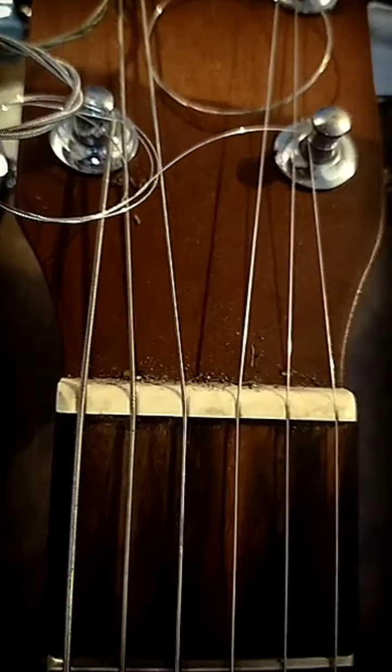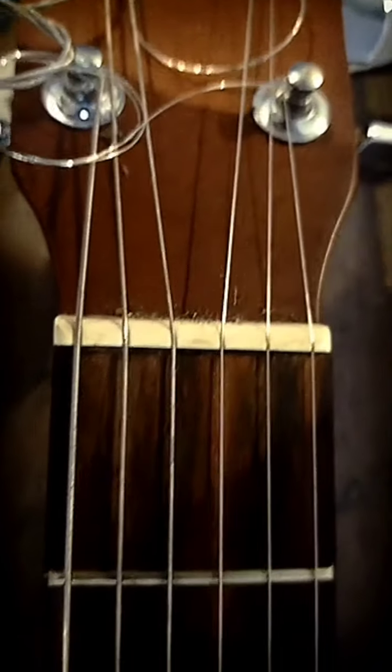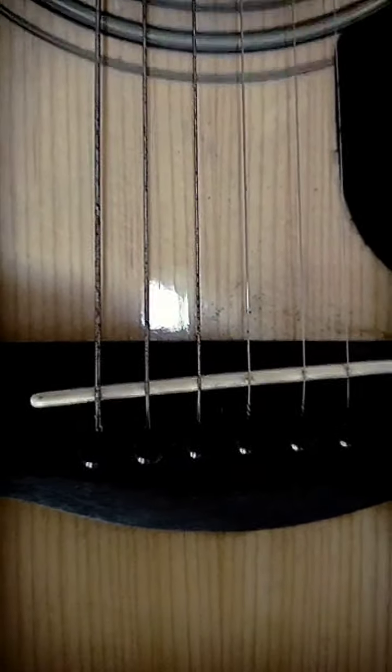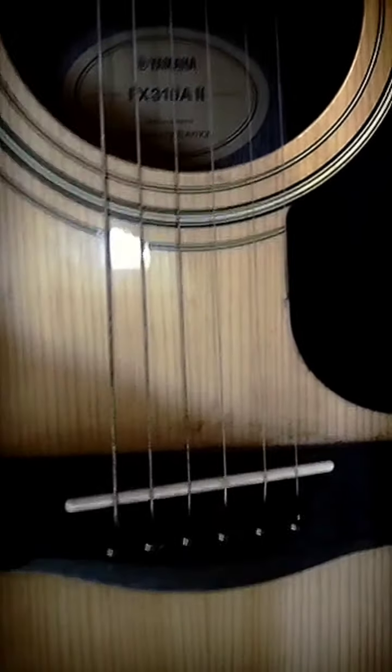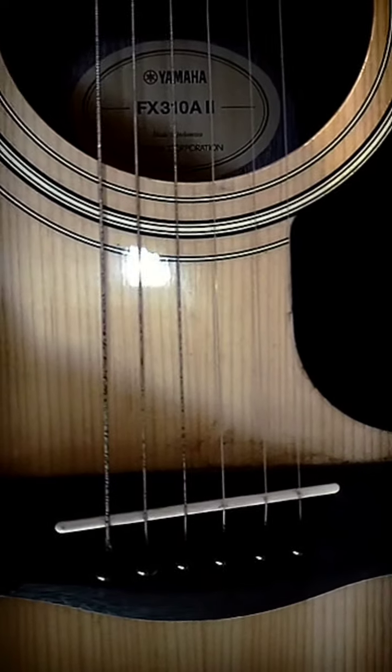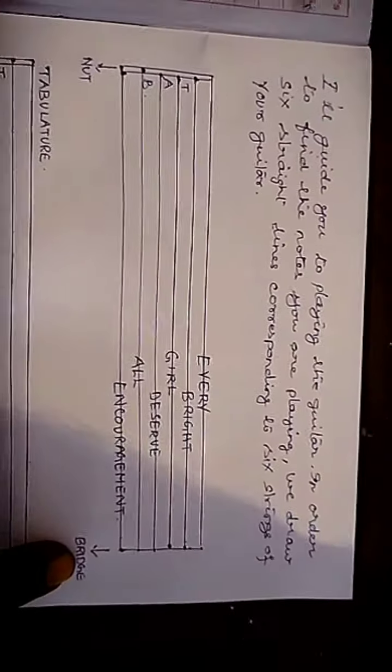What I suggest is you draw this picture from the nut to the bridge of the guitar. This is the bridge of the guitar, and what you find here is the saddle through which the string is passing. So I want you to put this on a piece of paper, just like this. There — this is the nut and this is the bridge.